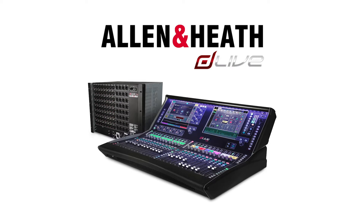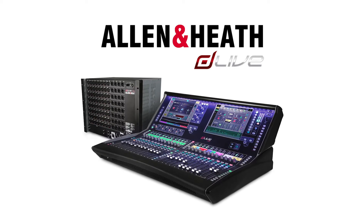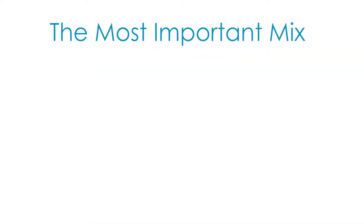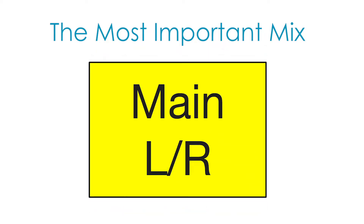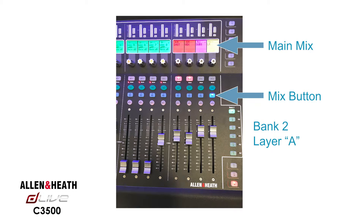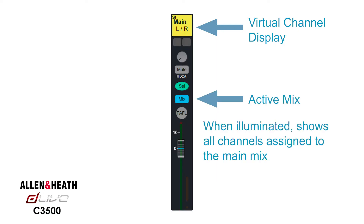In this video, we will focus on the different types of mixes found on the Allen & Heath DLive system, starting with the most important button on the mixer called the mix button. The most important mix is the main mix. On the C-3500 control surface, the main mix is located on the last channel strip to the right on layer A of the second bank. The blue mix button is located about halfway down the channel strip. The main mix is the only mix colored yellow in the virtual channel display.